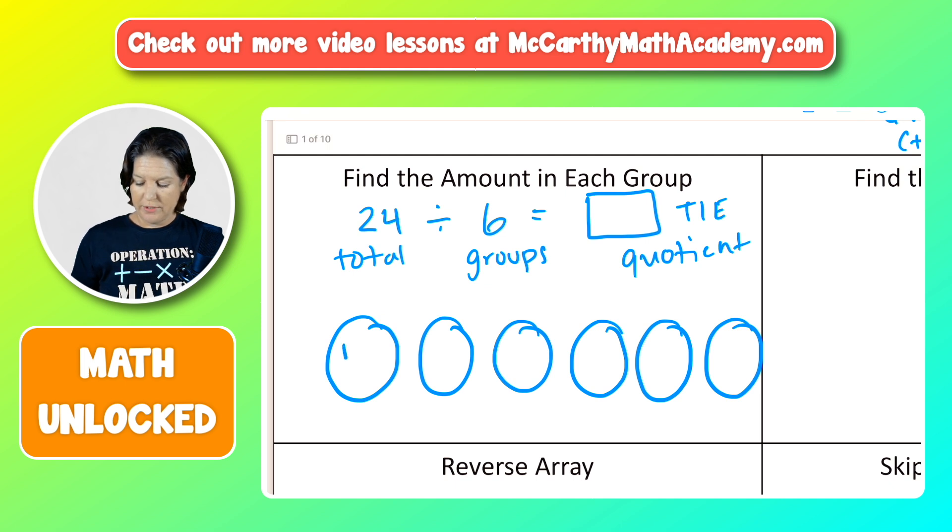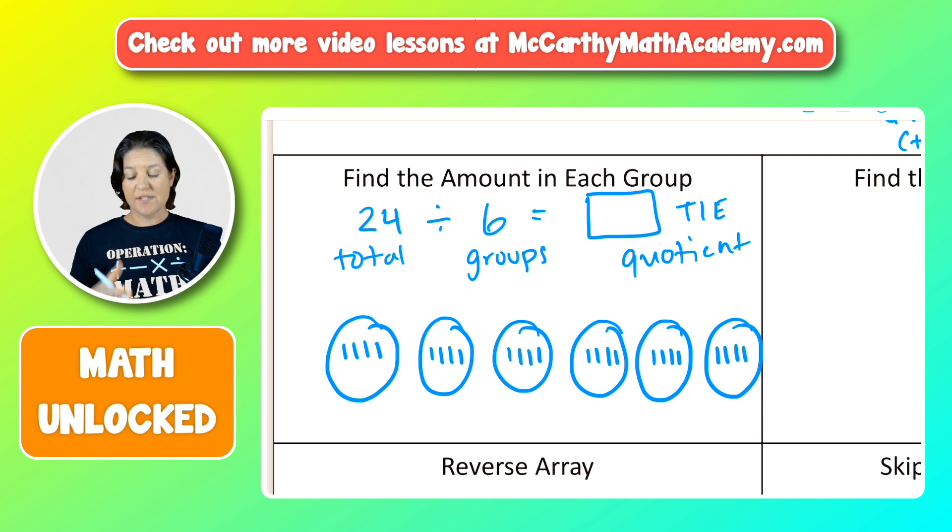And what I will do is take that total of 24 and distribute equally. So I'm going to distribute little tally marks, organized tally marks into these groups until I arrive at my total of 24. Let me zoom in so you can see what I'm doing. So we have one, two, three, four, five, six, seven, eight, nine, 10, 11, 12. I just stopped at 12, but I'm going until I get to 24. 13, 14, 15, 16, 17, 18, 19, 20, 21, 22, 23, 24.